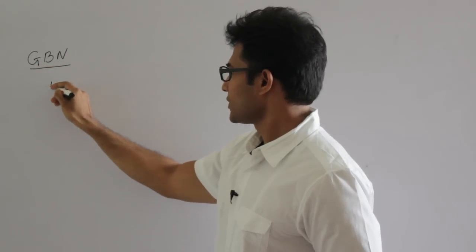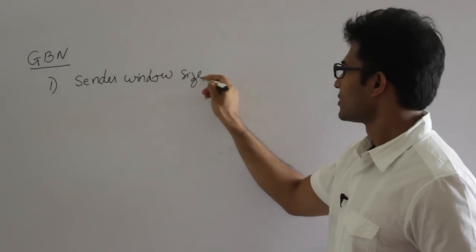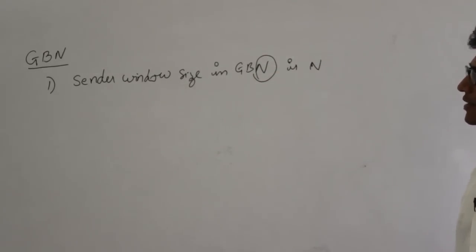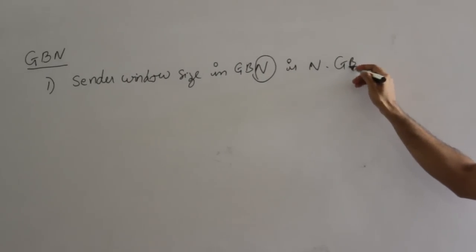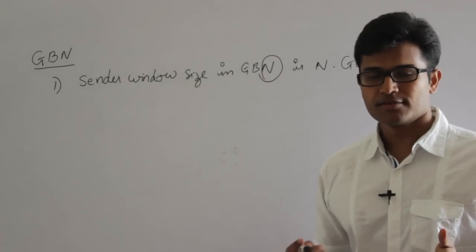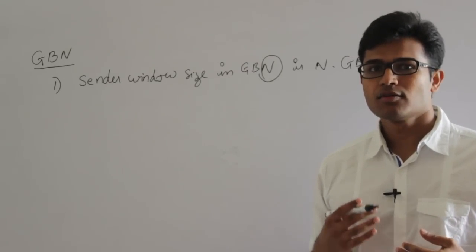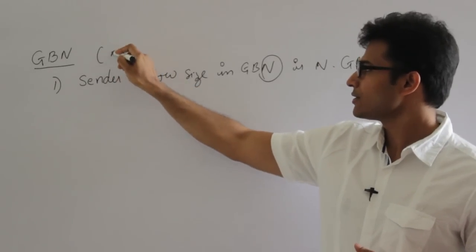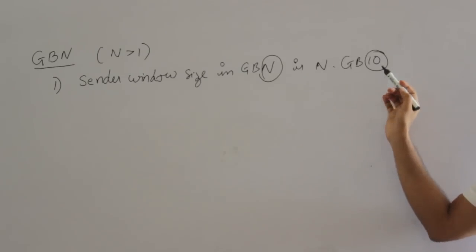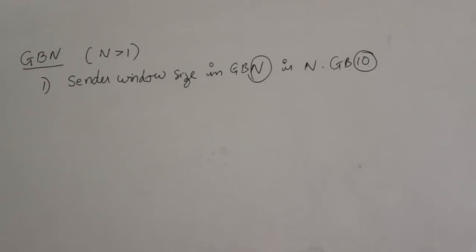There are three points. First point is sender window size. Sender window size in Go Back N is N itself. Which means if the protocol is Go Back 10, then sender window size is 10. The sender window size should always be greater than 1 — if sender window size is 1, it is simply stop and wait. So for pipelining as in sliding window protocol, N should always be greater than 1. In Go Back 10 or Go Back 100, whatever this number is, that is also called the sender window size.